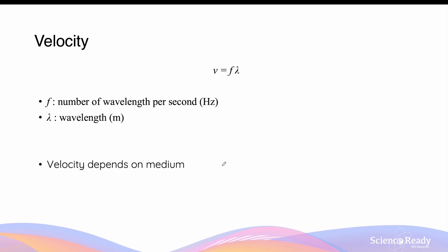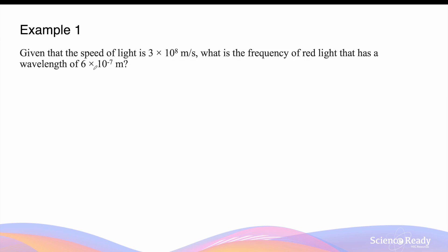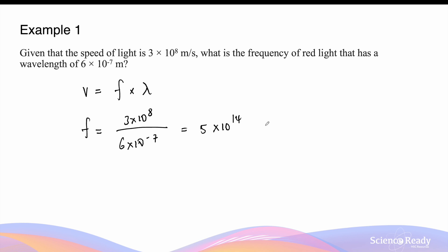For all types of waves, the velocity of the wave depends on the medium through which it travels — and this applies not just to mechanical waves, but also to electromagnetic waves, even if they don't require a medium to propagate. For example: given that the speed of light is 3 × 10⁸ meters per second, what is the frequency of red light that has a wavelength of 6 × 10⁻⁷ meters? The frequency is given by velocity divided by wavelength, which equals 5 × 10¹⁴ hertz.